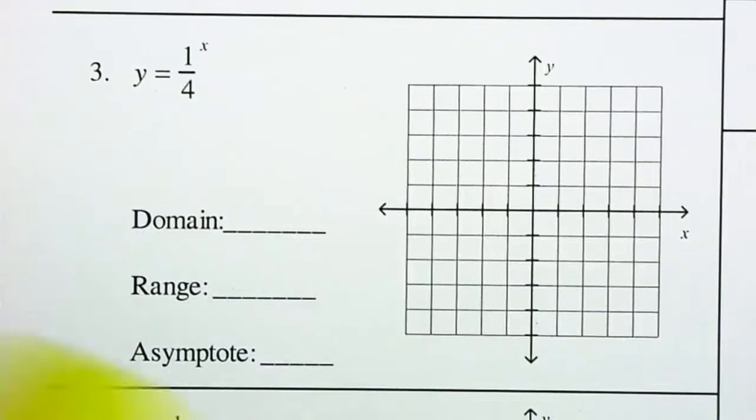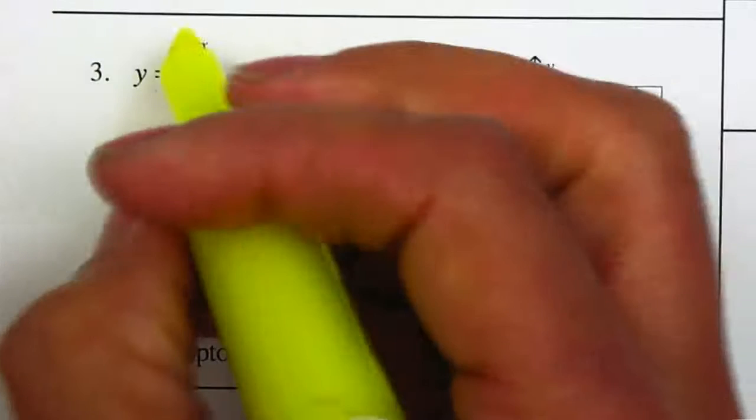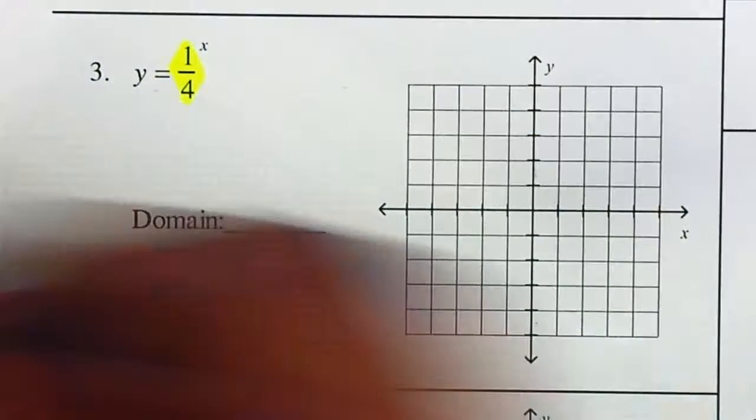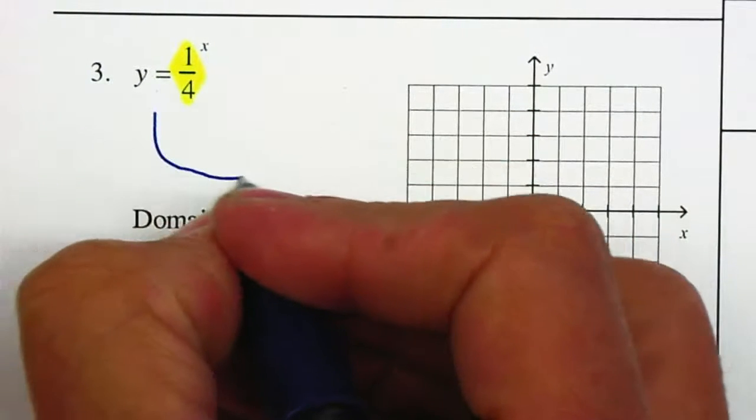You want to see what is being raised to the power of x. In this case, it's 1 fourth. If it's less than 1, we know it's going to be an exponential decay.